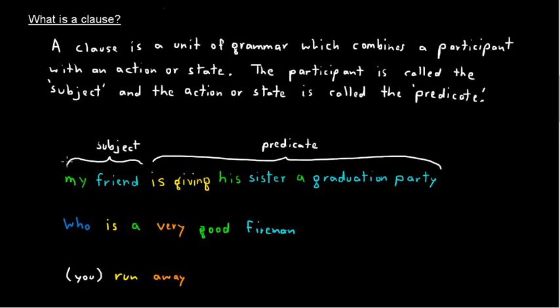Okay. Now, let's look at the next one. Who is a very good fireman? Who? This is one of those fuzzier subjects. But who is the participant? And in this case, we're looking for a state. Is a very good fireman. So this is the predicate.